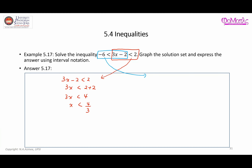For the second part: 3x minus 2 greater than negative 6. So 3x greater than negative 6 plus 2, giving 3x greater than negative 4. Dividing the inequality by 3 — a positive number — I do not need to reverse the symbol, giving x greater than negative 4 over 3.